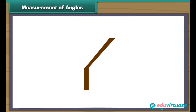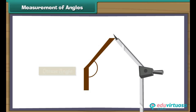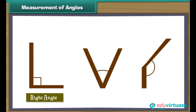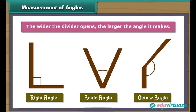Now consider the letter K of the English alphabet — let us modify it. Place the divider on the figure so that one arm and common point coincide with one arm and common point of the figure. The other arm of the divider lies to the right of the figure's other arm — this means the figure makes an angle greater than a right angle, that is an obtuse angle. Therefore, we can measure right, acute and obtuse angles with a divider. The wider the divider opens, the larger the angle it makes.